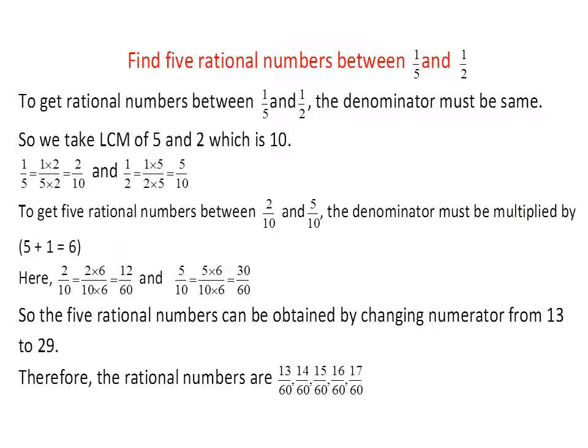Find five rational numbers between 1/5 and 1/2. When the denominators are different, we take the LCM of 5 and 2, which is 10. So 1/5 becomes 2/10 and 1/2 becomes 5/10. Now, to get five rational numbers between 2/10 and 5/10, we multiply the denominator by five plus one, that is six. So 2/10 becomes 12/60 and 5/10 becomes 30/60.